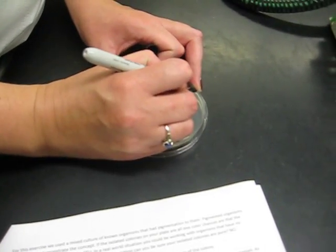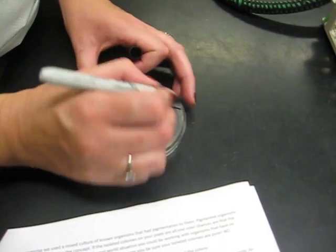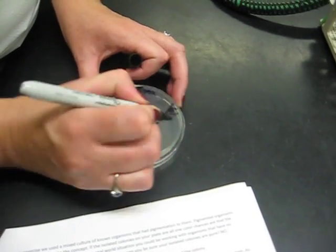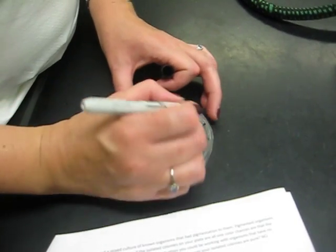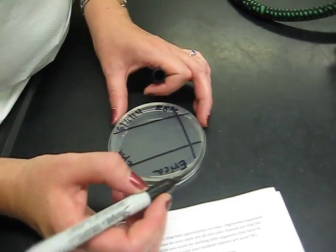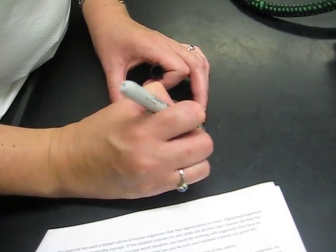Along the edge I'm going to write my name, the class time, the date, the temperature, which is going to be 25 degrees Celsius for this one. What am I forgetting? Oh, it's a mixed culture, so it's more than one bacteria in here.